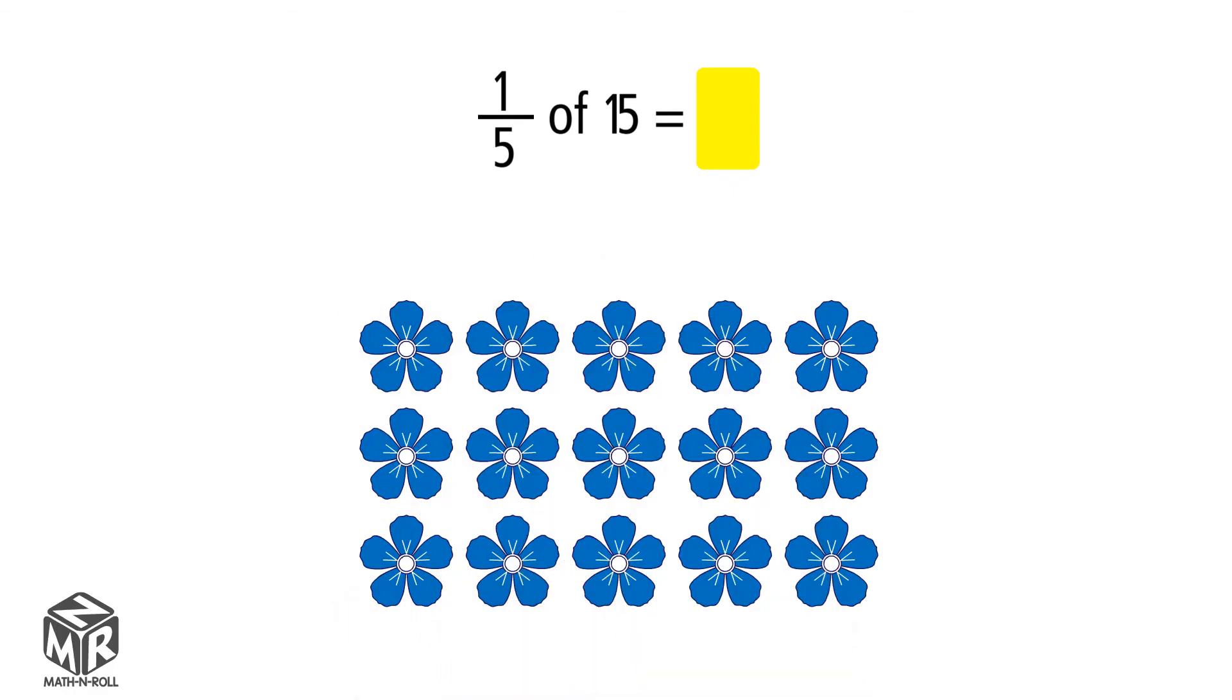Circle equal groups and count the number of flowers in one group. There are three flowers in one group, so one-fifth of 15 equals 3.